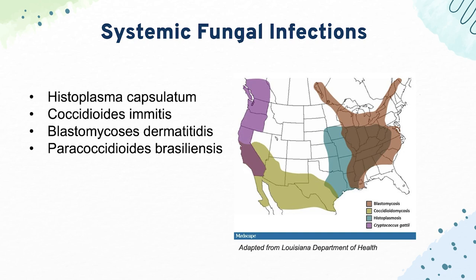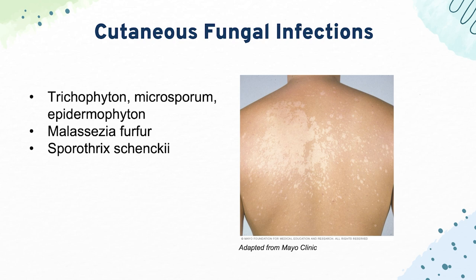Then we have Paracoccidioides brasiliensis, which usually affects patients in Latin America and looks like a captain's wheel under microscopy. For cutaneous fungal infections, we have the triad of Trichophyton, Microsporum, and Epidermophyton — all marked by branching septae visible on KOH prep — and they cause things like ringworm, jock itch, and athlete's foot.